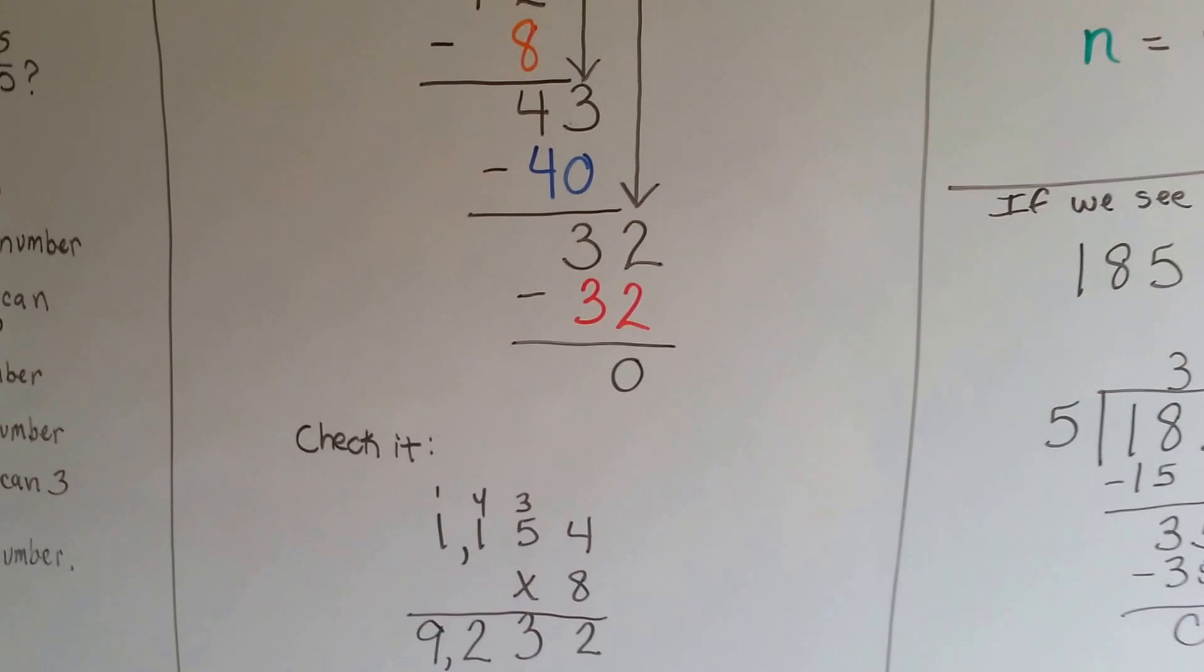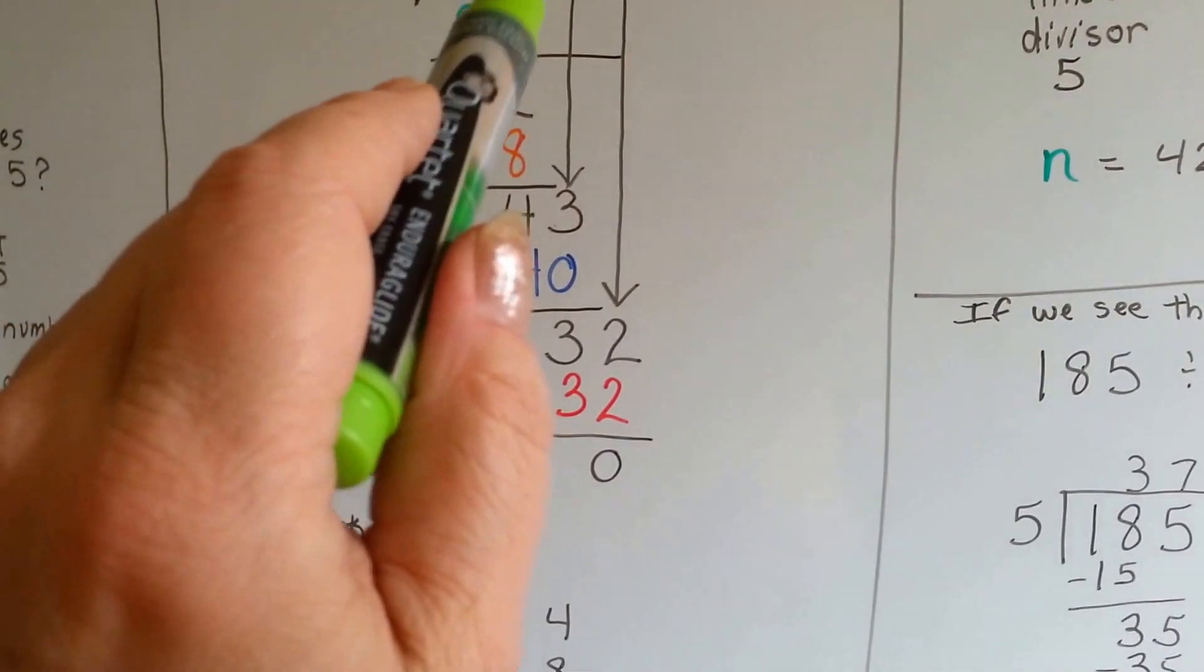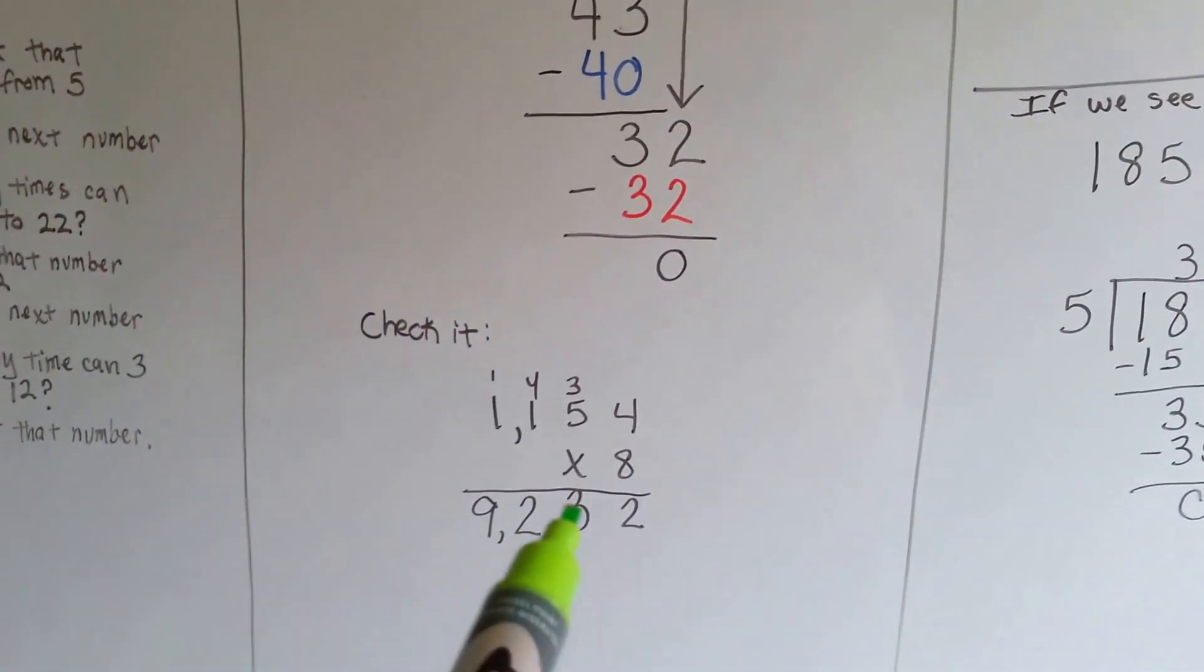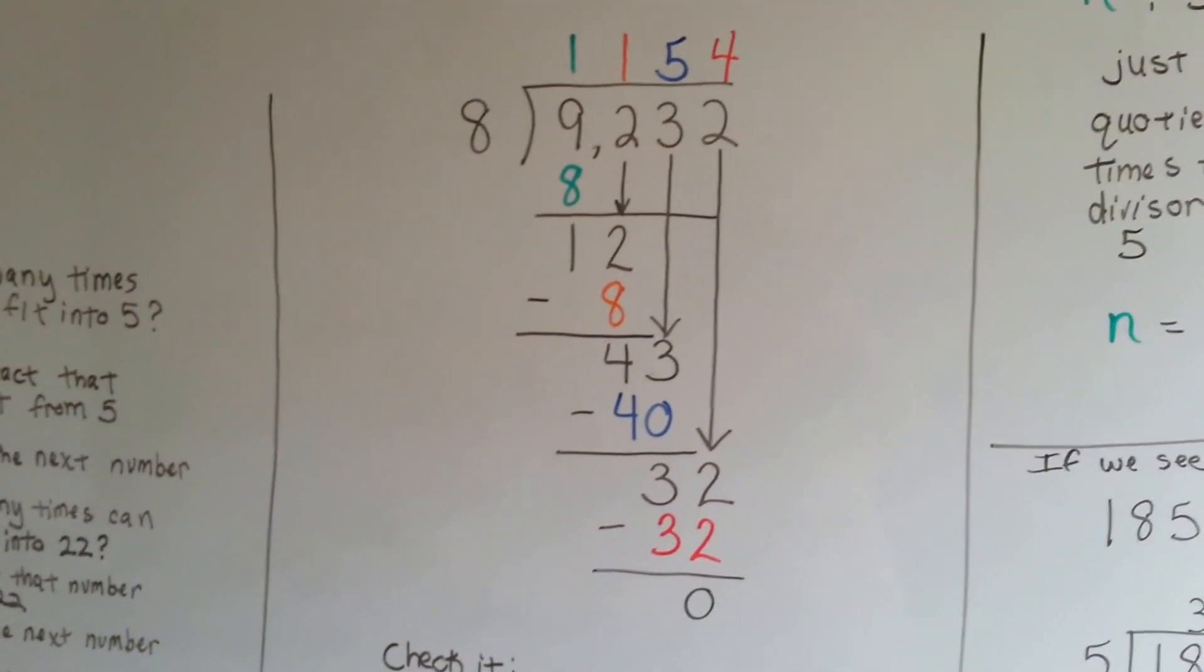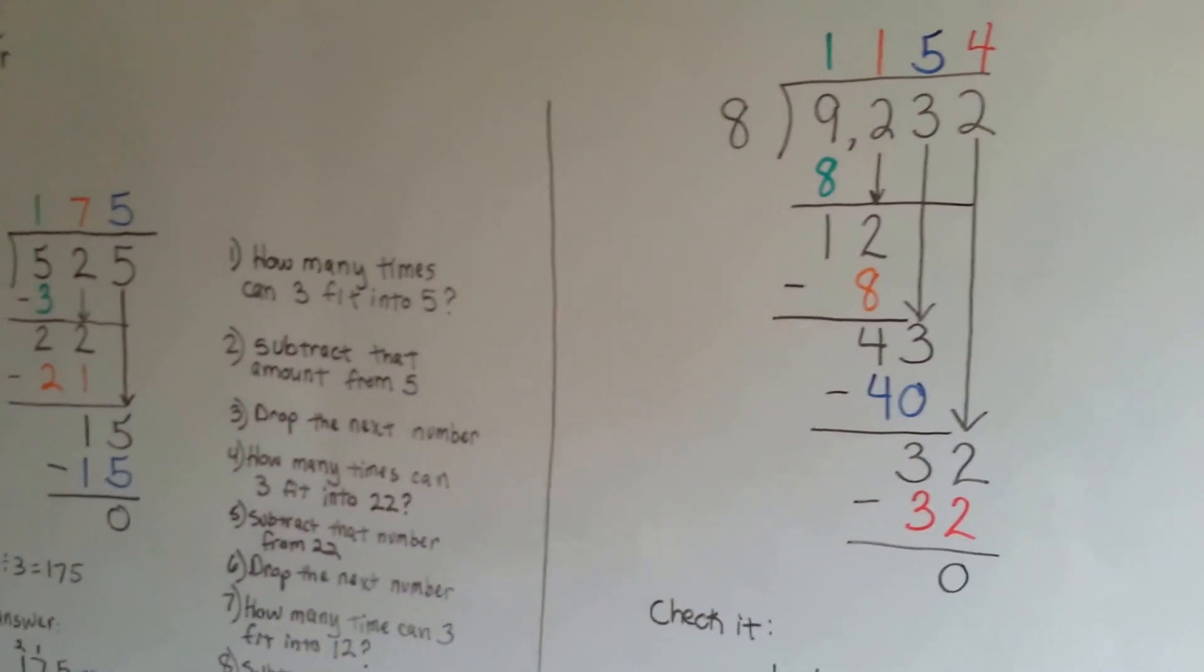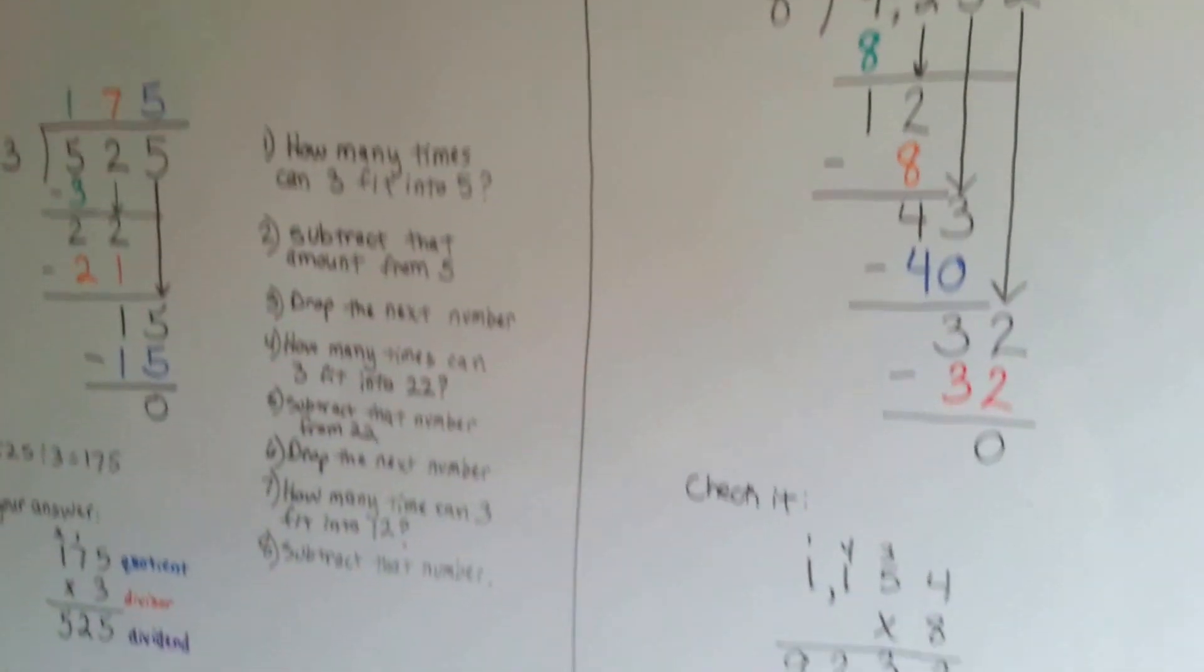And if this number is the same as our dividend, 9232, then we know that we did it correctly. The opposite of division is multiplication. So, in order to check our division, we need to multiply.